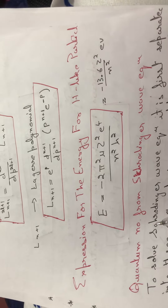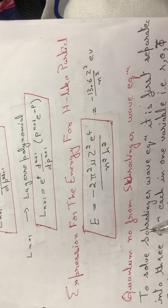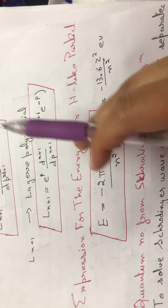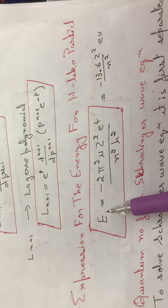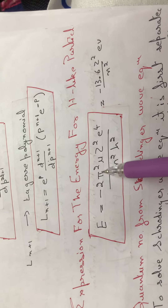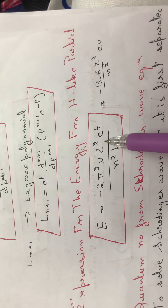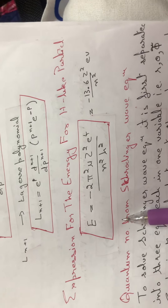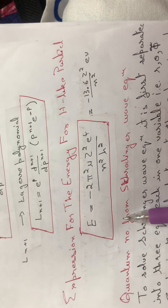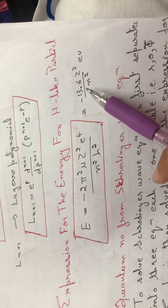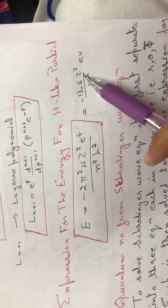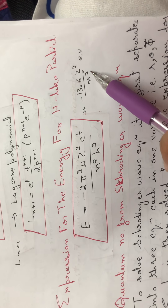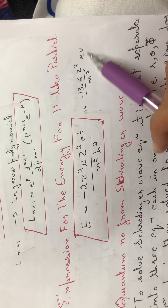The expression for the energy of hydrogen-like particles derived from all these expressions is: Eₙ = −(2π²μZ²e⁴) / (n²h²), and the numerical value works out to −13.6 · Z²/n² electron volts.